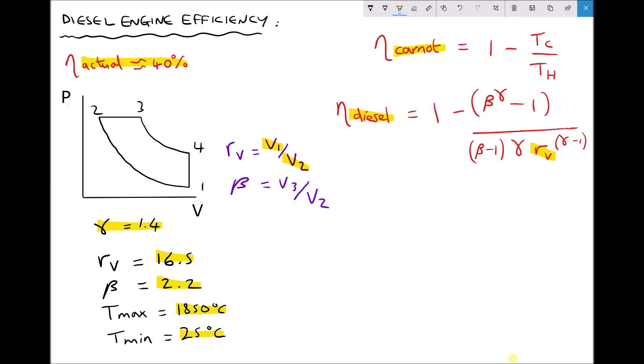So we're taking a volume of air V1 and we're reducing that volume of air to a much smaller volume V2. Now as the diesel cycle is compression ignition we would expect those compression ratios to be relatively high. So in this example we have a ratio of 16.5.